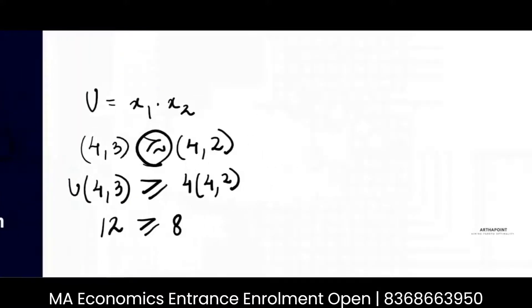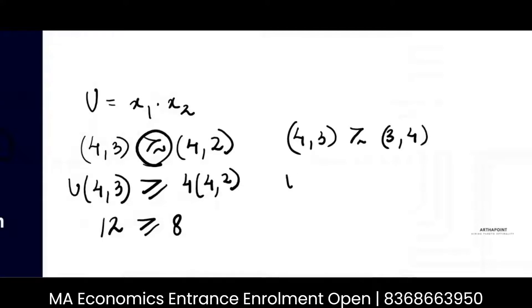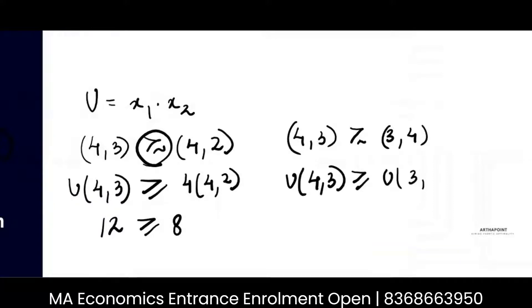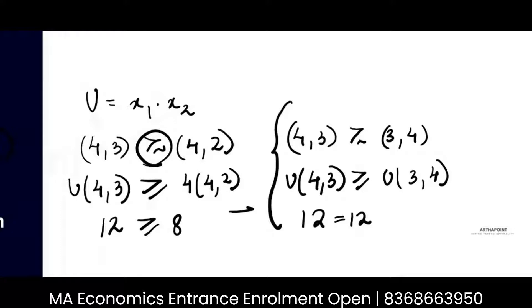Similarly, if I take the bundle (4, 3) and another bundle (3, 4), then the utility from (4, 3) is greater than or equal to the utility from (3, 4). So 12 equals 12 — the same preferences are taken care of.